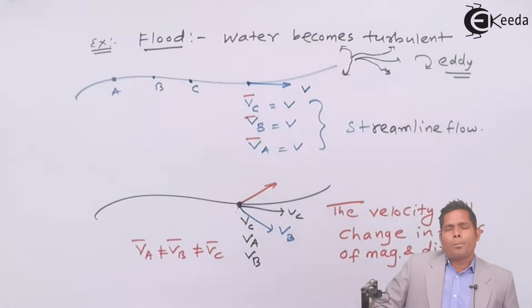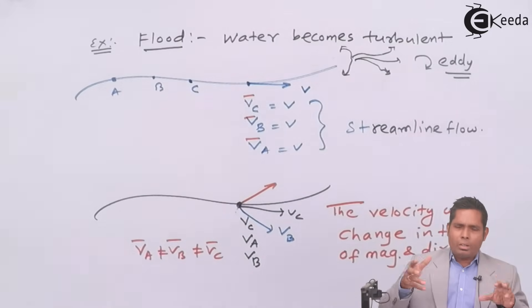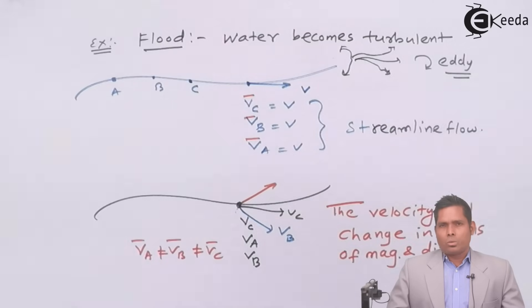Now one scientist called Reynolds gives the idea of how to find the flow whether it is turbulent or streamline. He gave a number known as Reynolds number that we'll discuss after this video. So that's all for your turbulent flow, thank you.